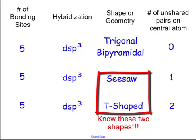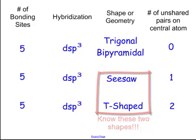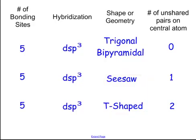Now, when we have one unshared pair, we call that seesaw. And when we have two unshared pairs, we call that T-shaped. Now, guys, seesaw and T-shaped are two shapes that you need to know and you've got to be able to fill out. Just like knowing the bond angles of 109.5, 107, and 105 for the tetrahedral, trigonal pyramidal, and the bent, you've got to know seesaw and T-shaped.